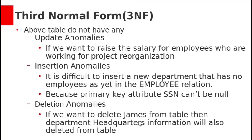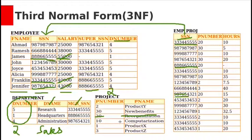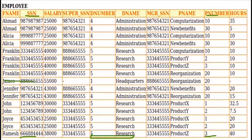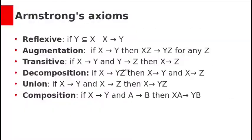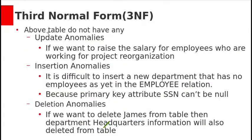In the universal employee relation, the primary key is SSN combined with project number, so department details could not be added without those values. Here, department data is stored in a separate table, so that problem does not exist. For deletion anomaly, deleting James from the universal table would also delete headquarters information. In the 3NF relations, deleting James removes only his row without affecting department data. These 3NF relations are free from update, insertion, and deletion anomalies.